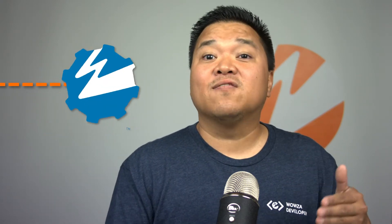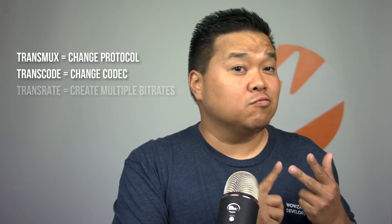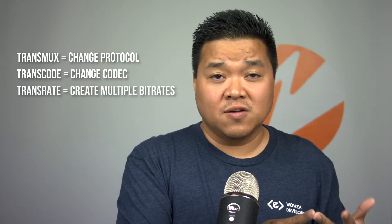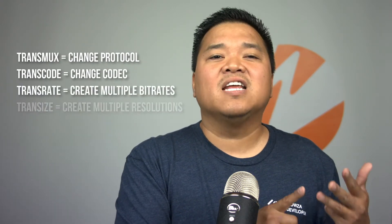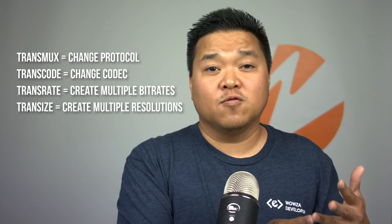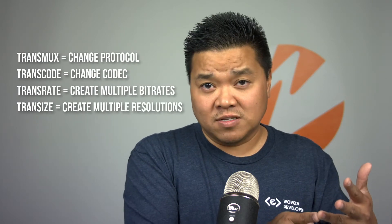The media server takes the stream from the encoder and converts it as needed. It may transmux it into different protocols, transcode the data into a new codec, transrate the data to make multiple versions at different bit rates, and even transsize the data for multiple versions at different resolutions.